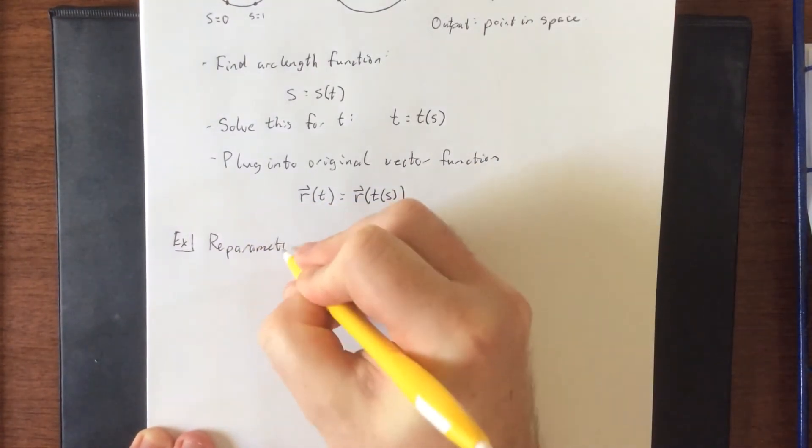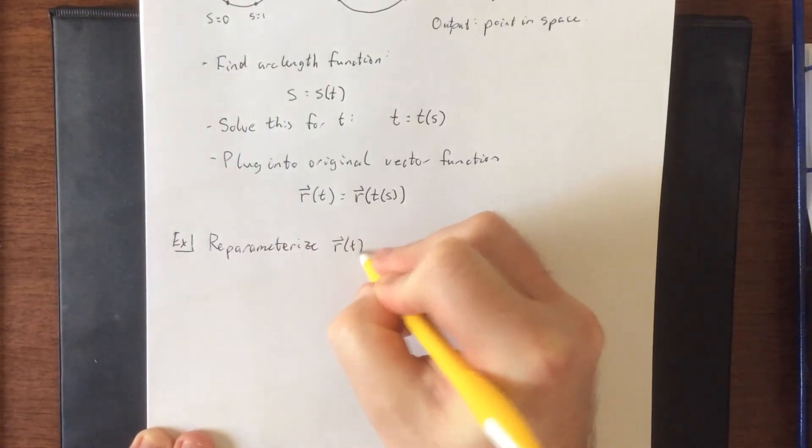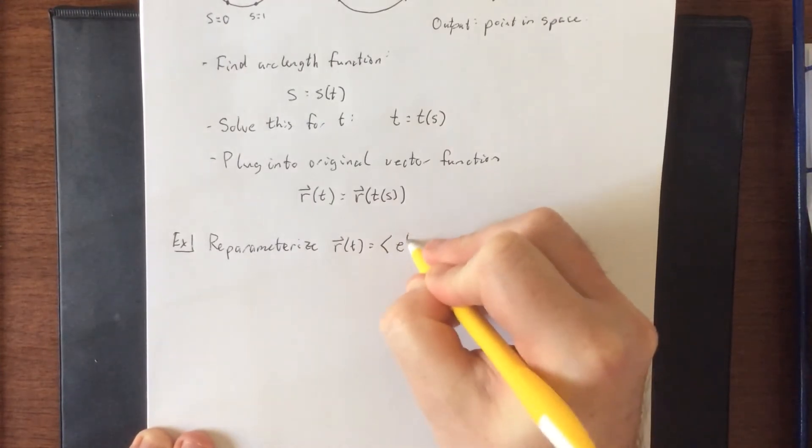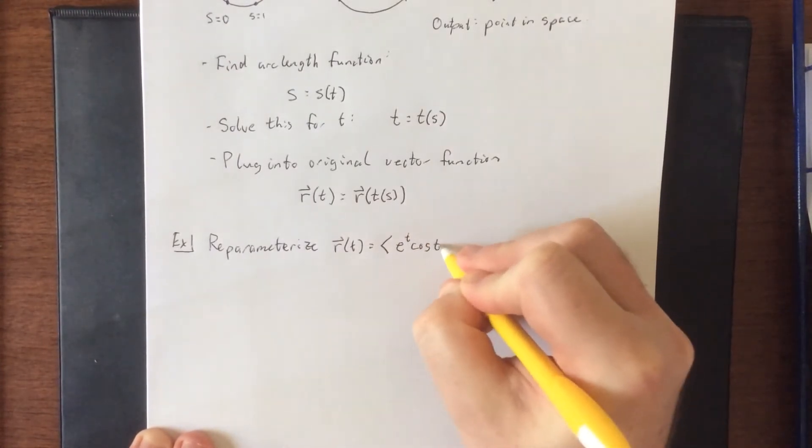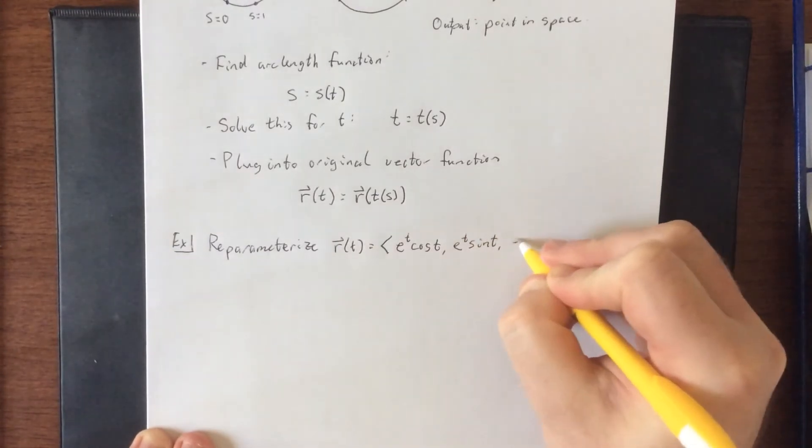What we're going to do is reparameterize r of t equals the following function: e to the t cosine of t, e to the t sine of t, e to the t.